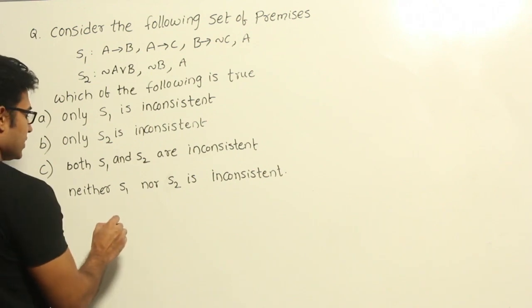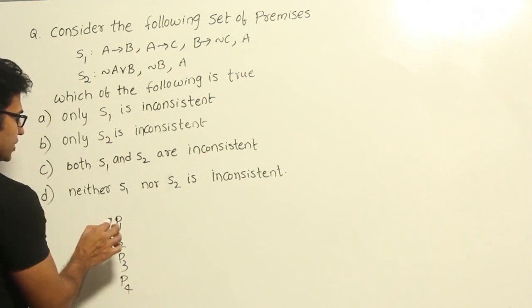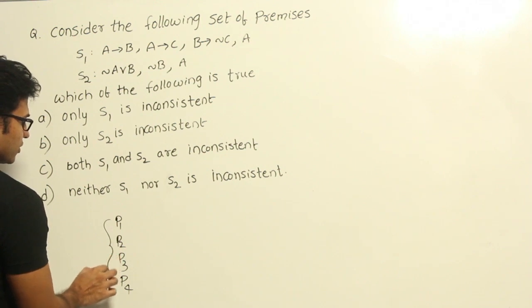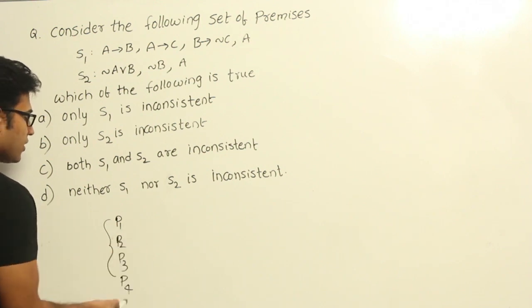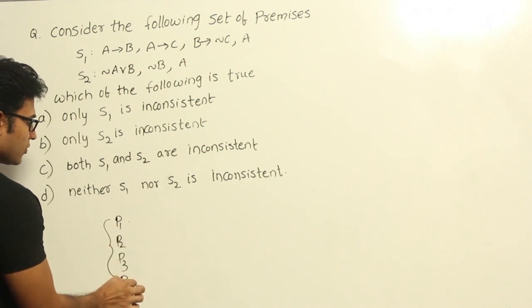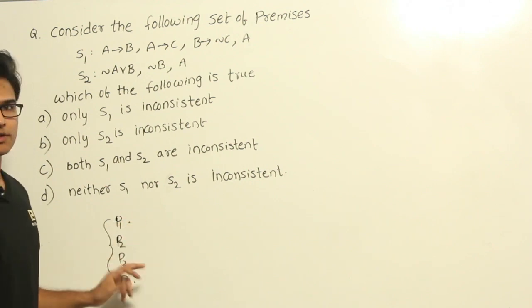Let's say you have premises like this: P1, P2, P3, something okay. Now we always start with the assumption that all these given premises are true. Now here you should not have two different premises which are almost the same but they don't agree with each other, right?